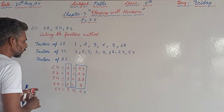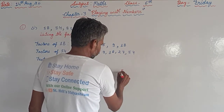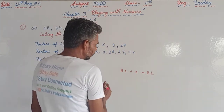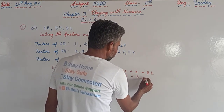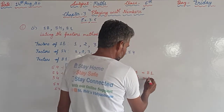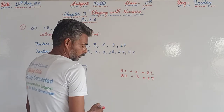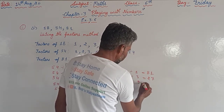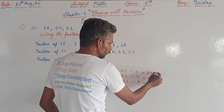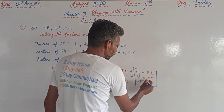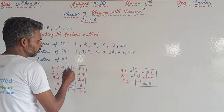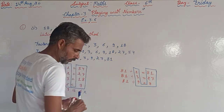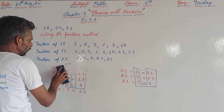For 81: 81 ÷ 1 = 81. 81 does not come in the table of 2 because it is odd. 81 is divisible by 3 because 8+1=9, which is divisible by 3. 81 comes in the table of 9 as well — 9×9=81. So the factors of 81 are: 1, 3, 9, 27, and 81.